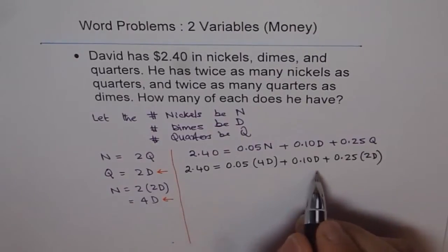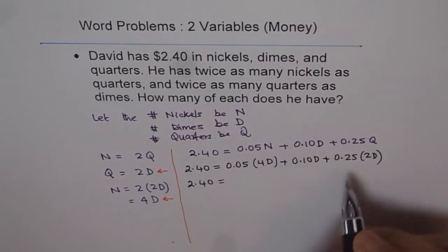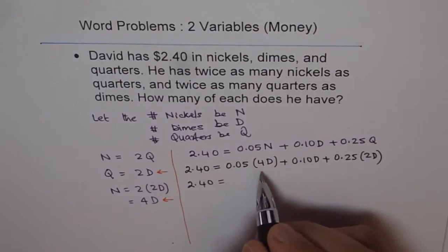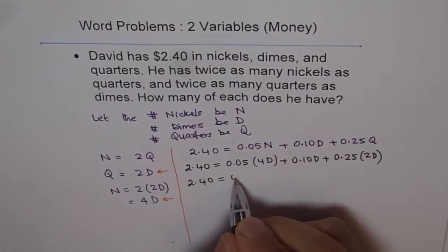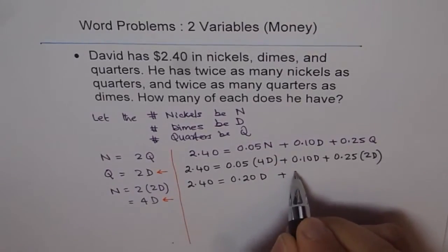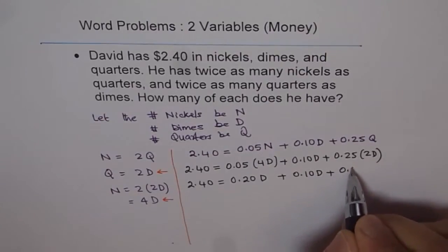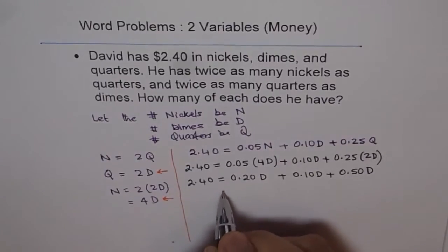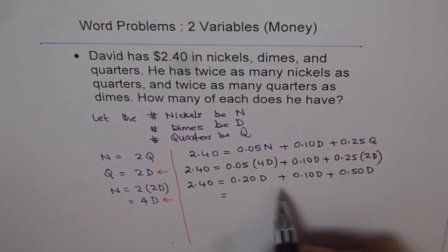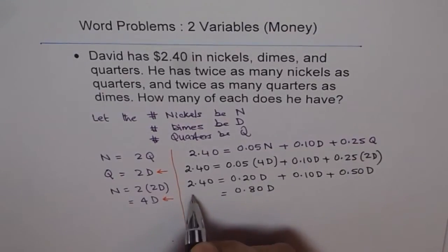Let's open this up and solve it. 4 times 0.05 is 0.20D. This one is 0.10D. And 2 times 0.25 gives 0.50D. Now let's combine all this. 0.2, 0.1 and 0.5. So 2, 3 and 5 is 8. We get 0.80D equals 2.40.